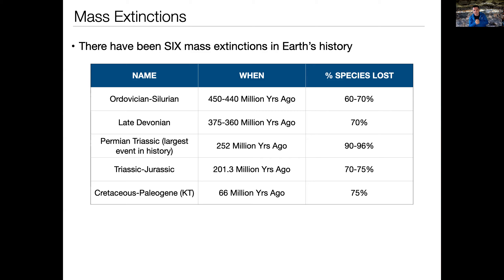The next extinction is called the Triassic-Jurassic extinction, 201.3 million years ago, where we lost again about 75% of species. And then the last extinction in the list is called the Cretaceous-Paleogene extinction, but many of you may know it by a previous name: the KT event. That happened just 66 million years ago, where we lost 75% of all the species on Earth, including the dinosaurs.